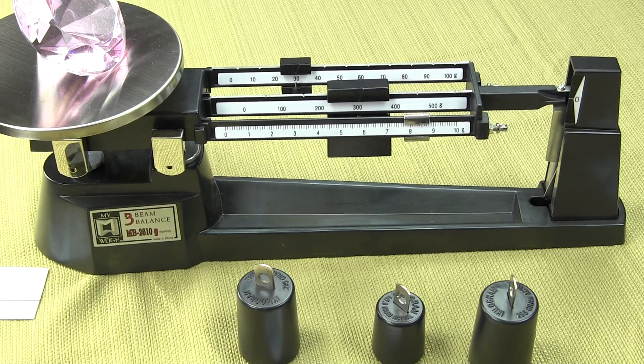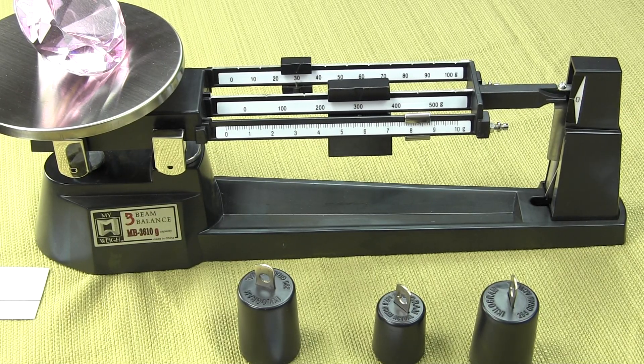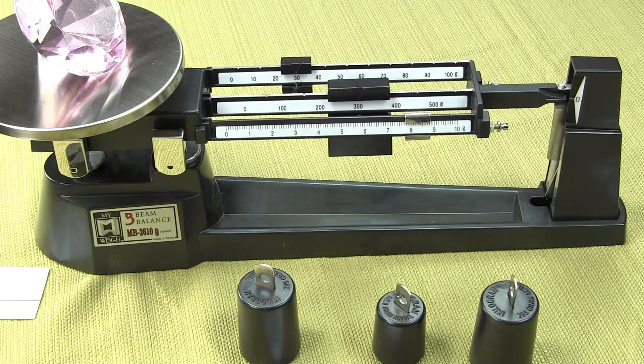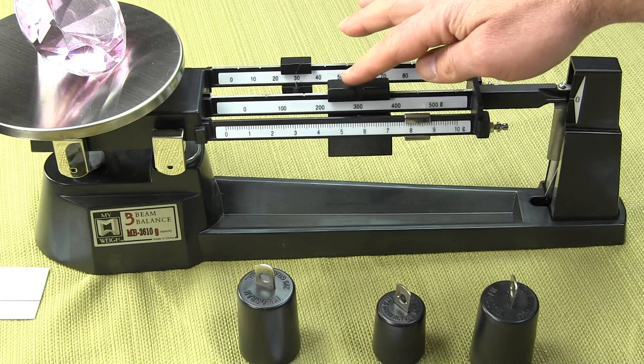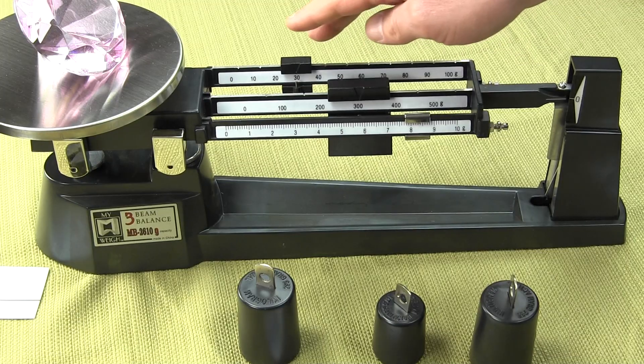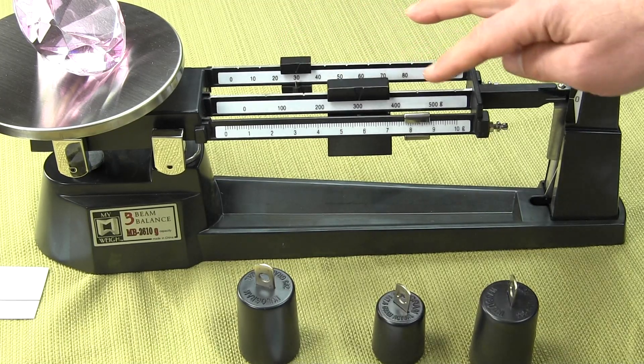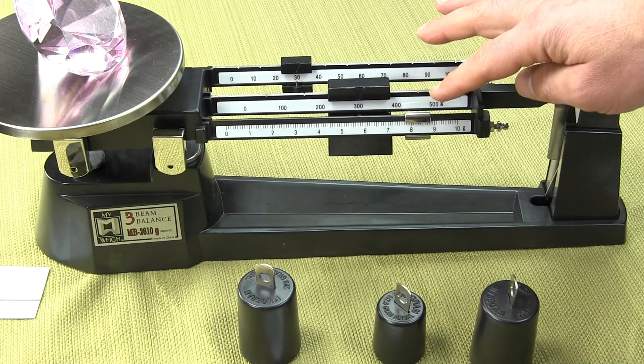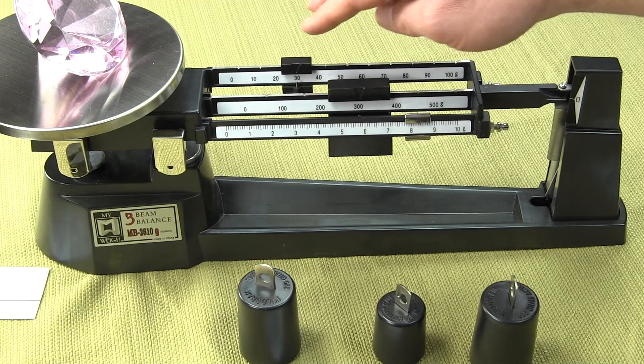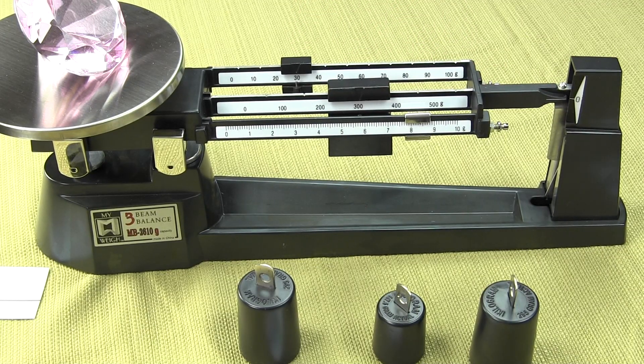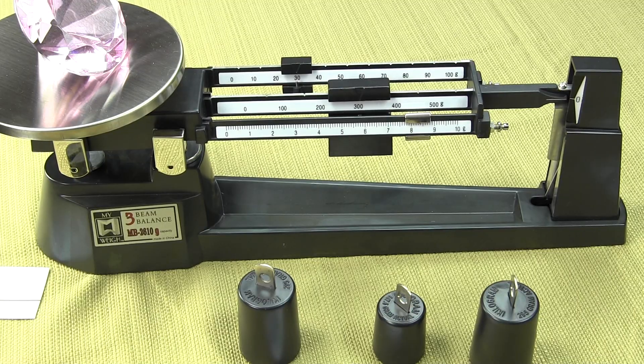Once it's level, the way we figure out what the weight is, the two hash marks are meeting each other. We want to add the middle poise which is 300, the rear poise is 30, and the front poise is 8.2. So we would have 338.2 grams. That's what that object weighs.